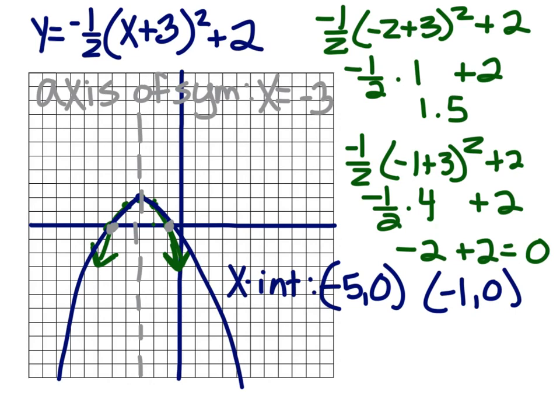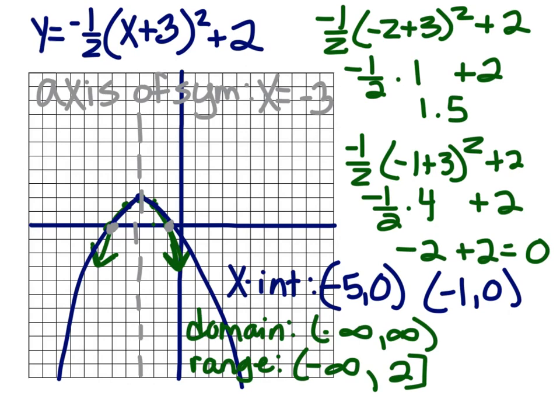Maybe they'll ask you for the domain. Well, it's a parabola. It's all real numbers. Negative infinity to positive infinity. And if they asked you for the range, be careful. We always go least to greatest, or bottom to top. So the bottom of this parabola is negative infinity, and the top of it is at 2. And it does touch the 2.